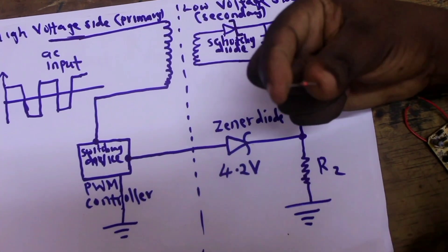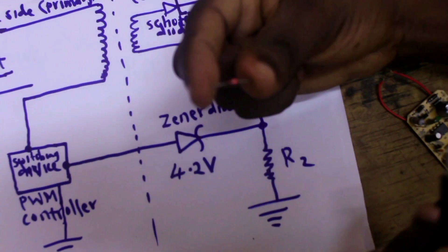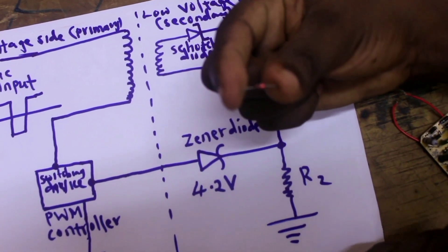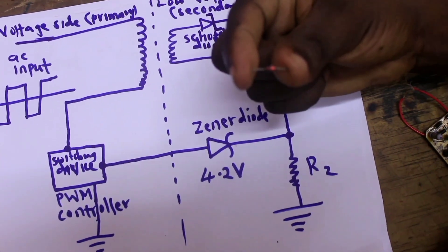So guys this is the Zener diode. The Zener diode is a special diode which conducts current when forward biased but it does not conduct current when reverse biased until you reach the Zener breakdown voltage.